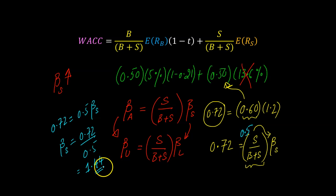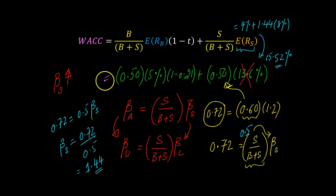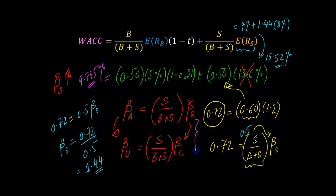Once we have the new equity beta, the rest is easy. The required return on equity is the risk-free rate plus the equity beta times the market risk premium: 4% plus 1.44 times 8%, which equals 15.52%. Plugging this into the WACC formula with 50% debt and 50% equity, you get a new WACC of approximately 9.735%. The key to this calculation is the two-step process.